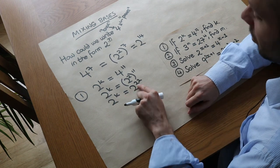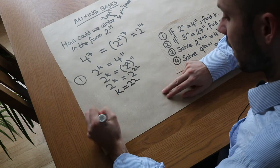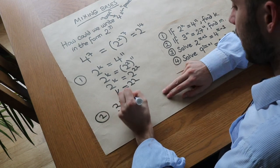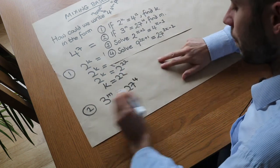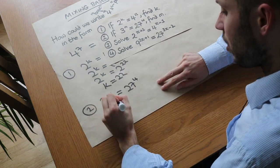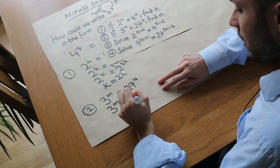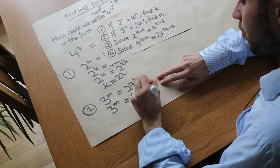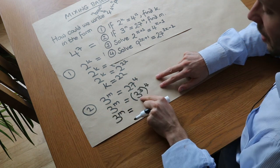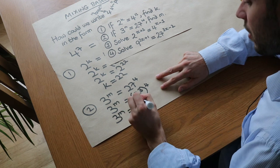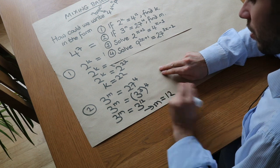What about the second one? We've got 3^m = 27^4. We note that 27 is 3 cubed, so we replace the 27 with 3 cubed in brackets. We can simplify the right-hand side to 3^12 by multiplying the powers. That means m equals 12 because we equate the powers now that the bases are the same.